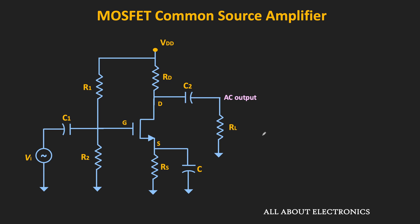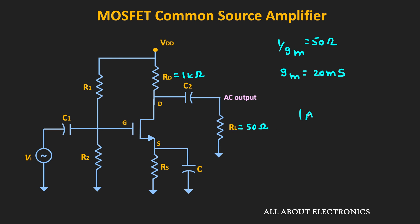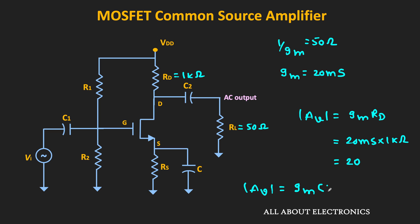Let's say we have a common source amplifier used to drive a 50-ohm load, so RL equals 50 ohm. At the operating point, 1/Gm equals 50 ohm, meaning Gm equals 20 mS, and let's say Rd equals 1 kΩ. Without considering the load resistor, the voltage gain equals Gm times Rd, which is 20 mS times 1 kΩ, equal to 20. But with the load resistor, the voltage gain equals Gm times (Rd parallel RL), and in that case the voltage gain comes out as 0.95, because RL equals 50 ohm. As you can see, with the load resistor, the voltage gain of this common source amplifier reduces significantly.